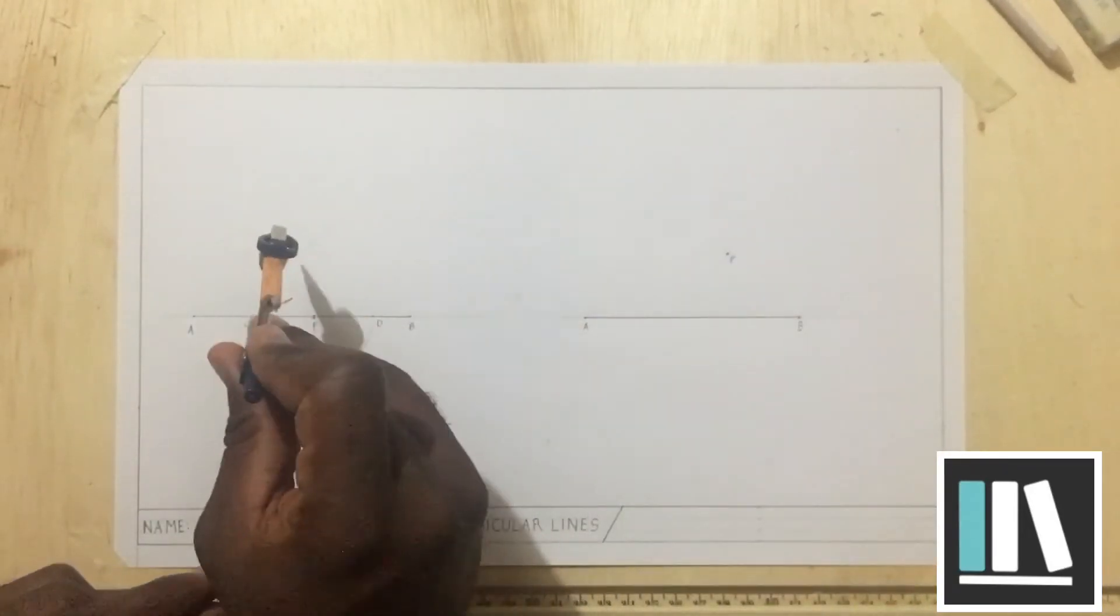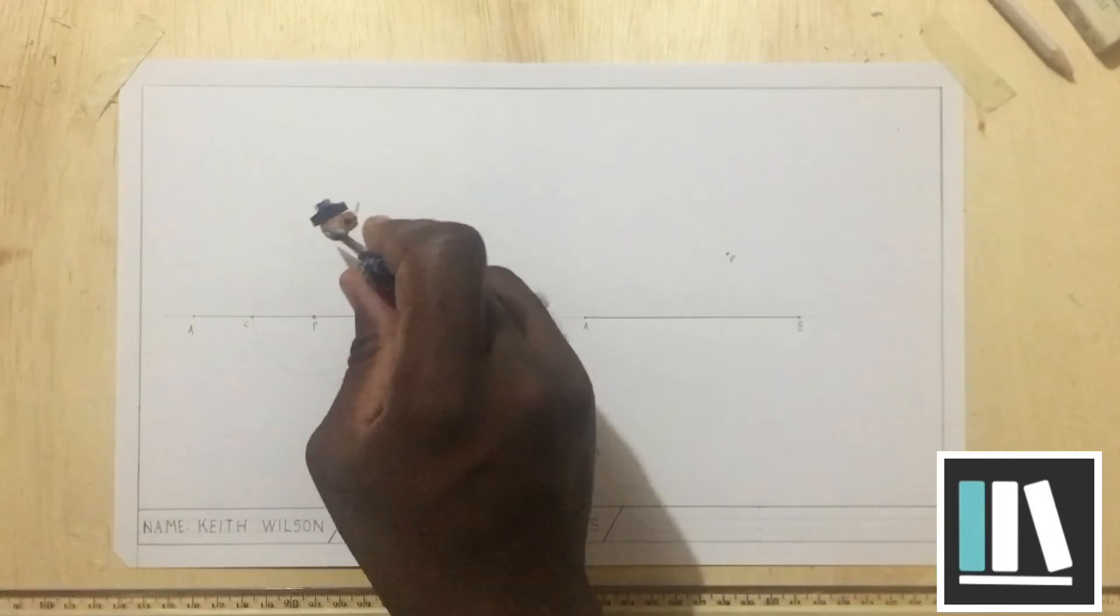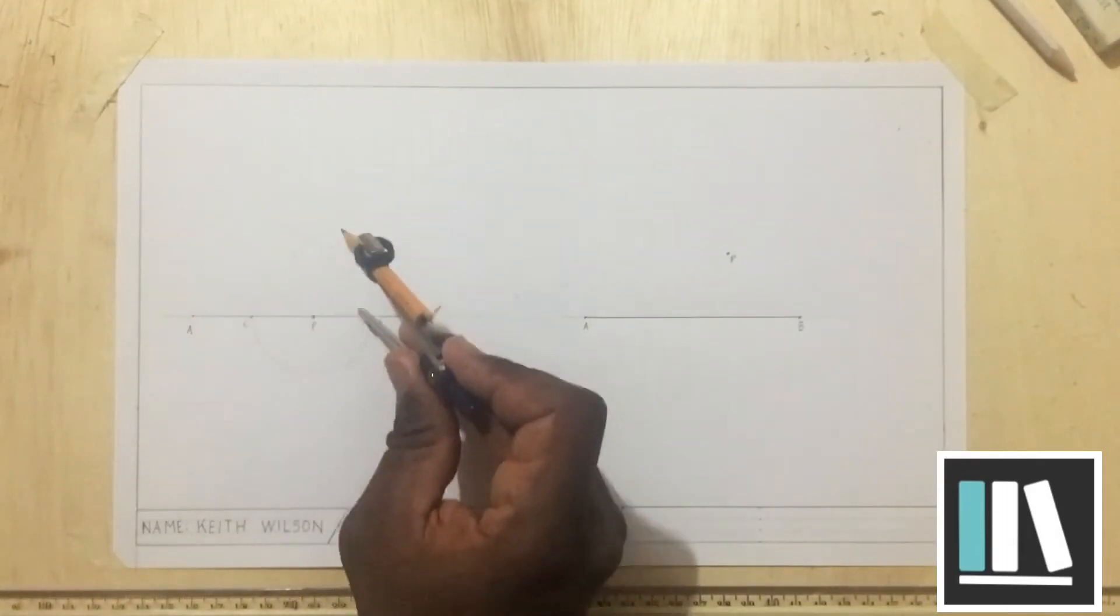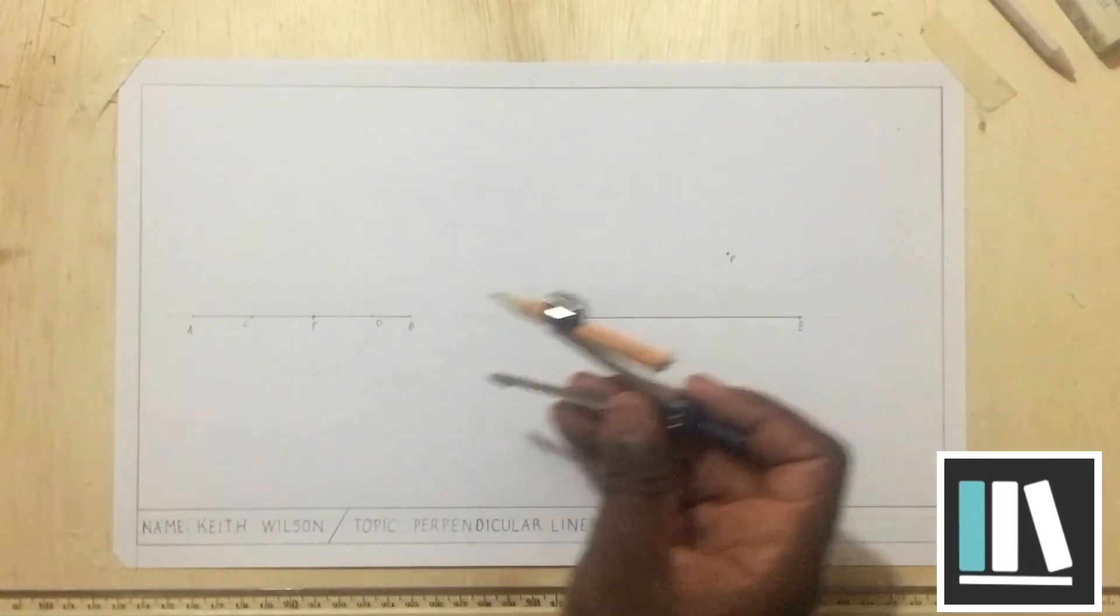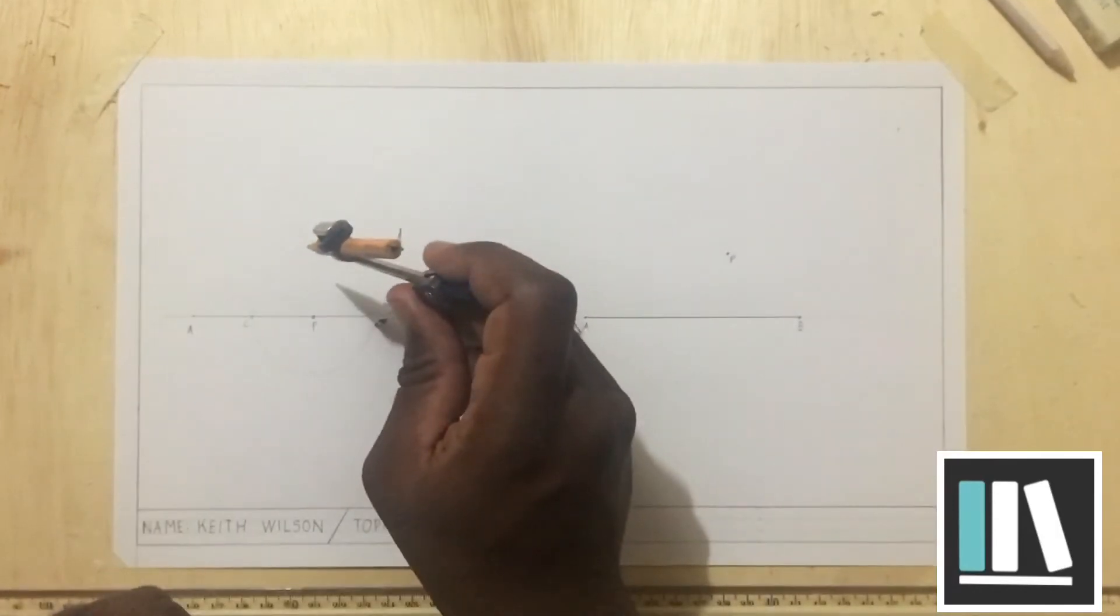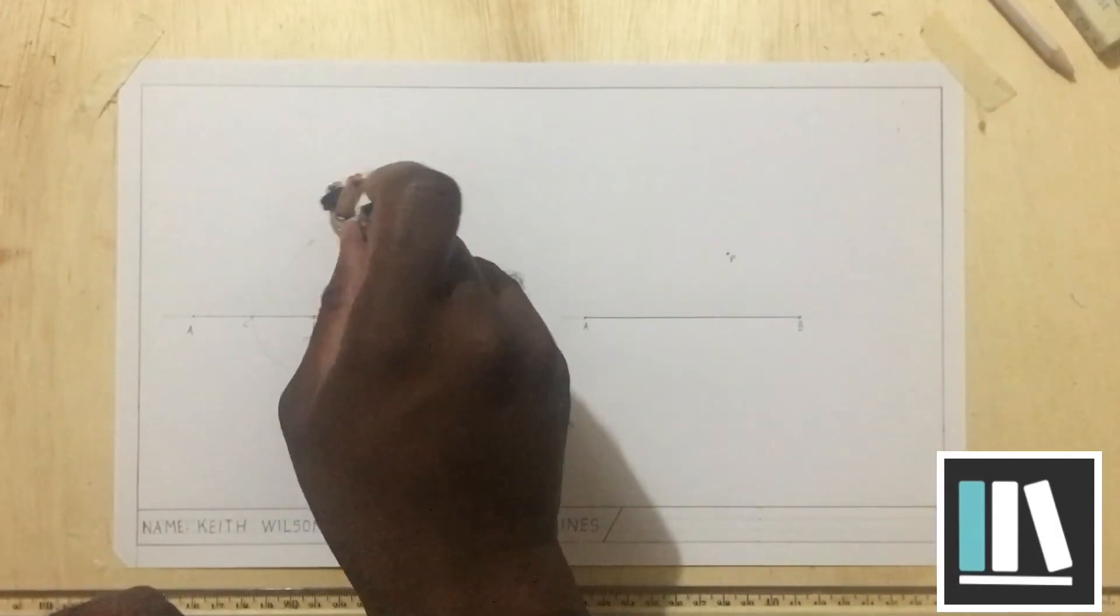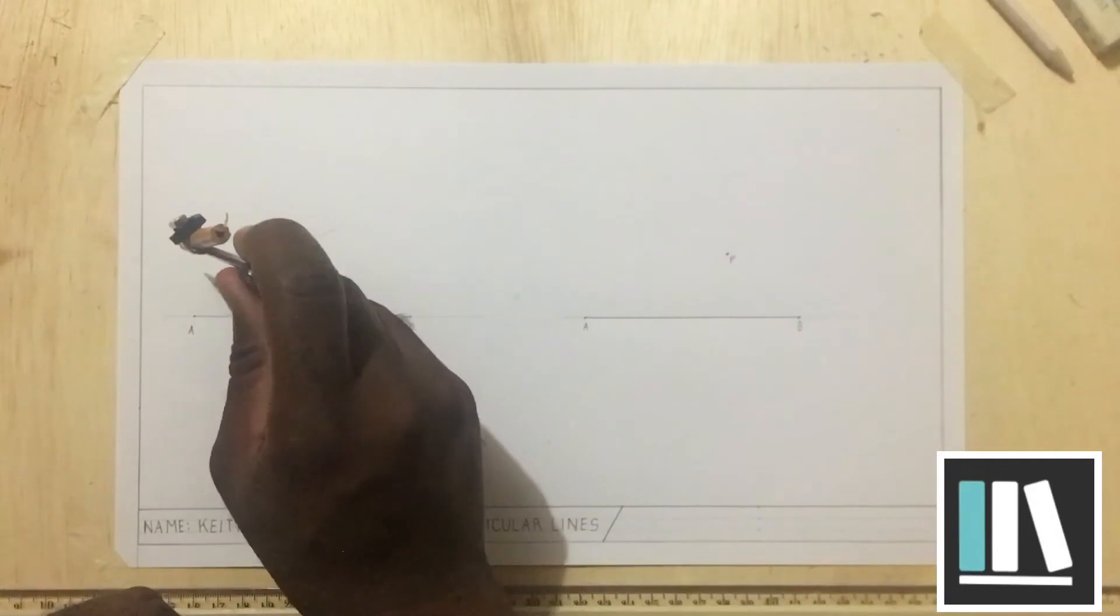I am using the same radius for C and D. The radius can be different for the first arc. But the radius for the second arc and the third arc must be the same.